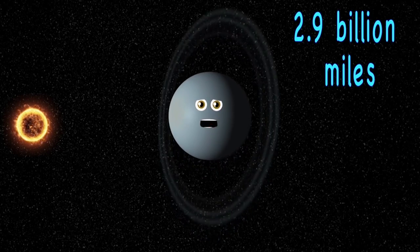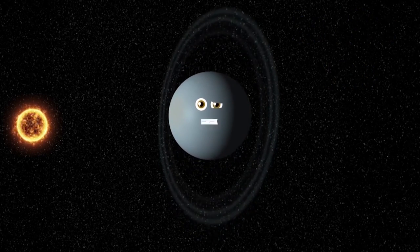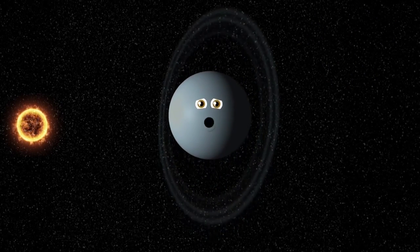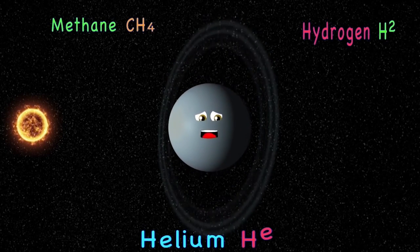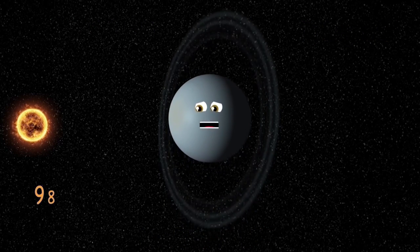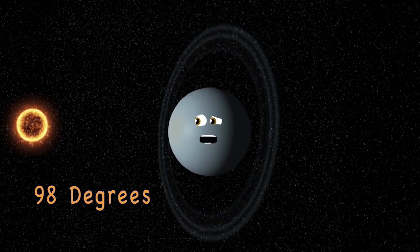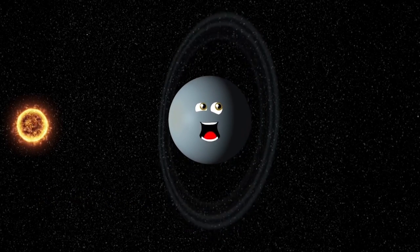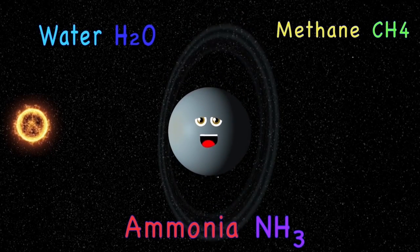2.9 billion miles is my distance from our sun, and I am an icy giant. It's so cold on me. My atmosphere is mostly made up of the following three: hydrogen, methane, and helium. The tilt of my axis is at 98 degrees. It's one of the steepest tilts in our galaxy. Most of my mass is made up of the following three: water, methane, and ammonia.